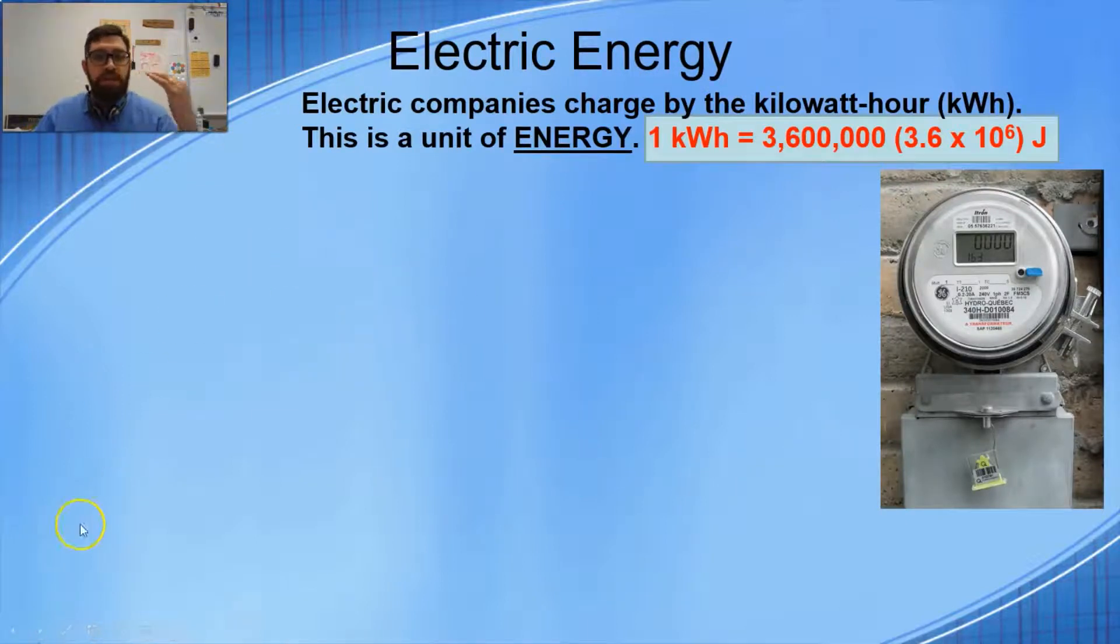Electrical energy. So electric companies actually charge by a unit called the kilowatt-hour. Kilowatt-hour is just simply a unit of energy. There's lots of units of energy that people use for different reasons: BTUs (British thermal units), calories, kilocalories. One kilowatt-hour is a really big unit of energy. It happens to be equal to 3.6 times 10 to the 6th joules, which is 3,600,000 joules.